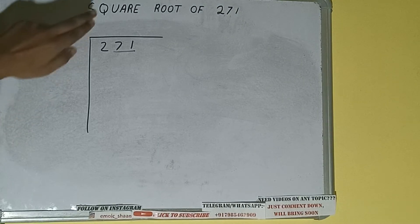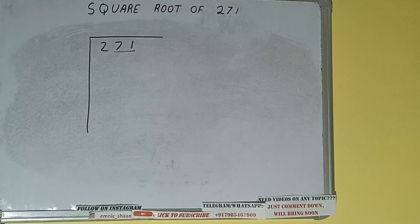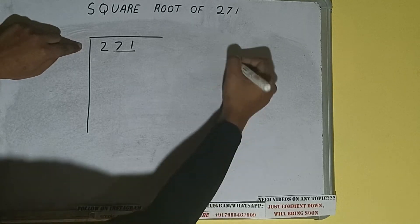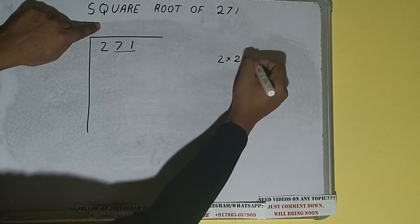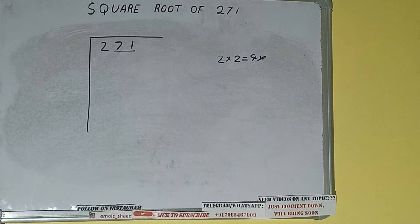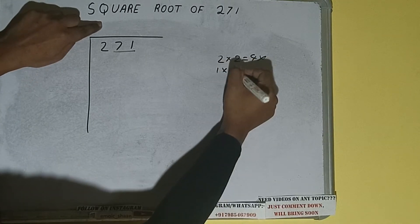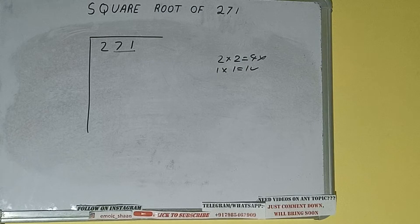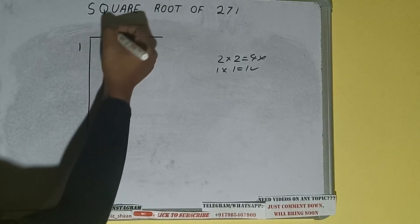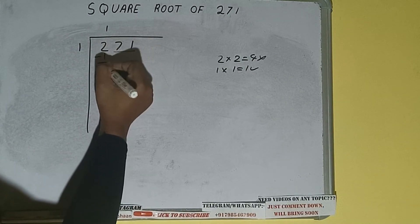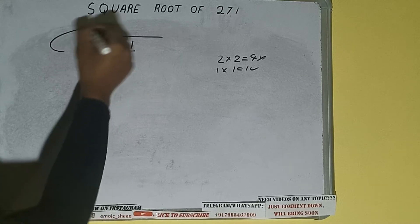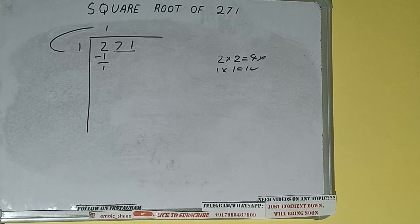The rule is whatever number we write here we have to write here also. So if we write two here and two here it will be four, which is greater than two, so we cannot use it. If we write one here and one here it will be one, which is good to use. So one here and one here, one subtract one will be left. We did one into one, so add both. So one plus one will be two.